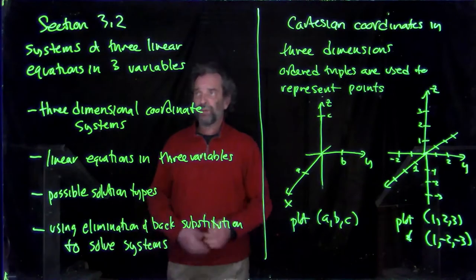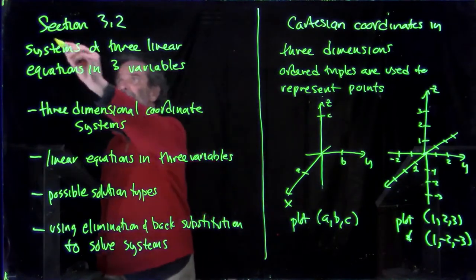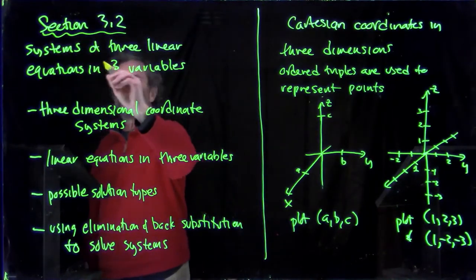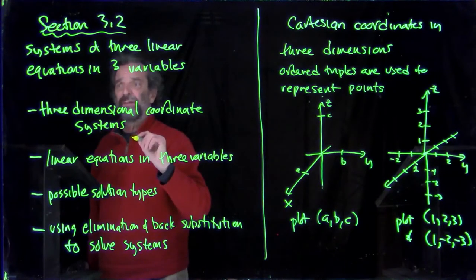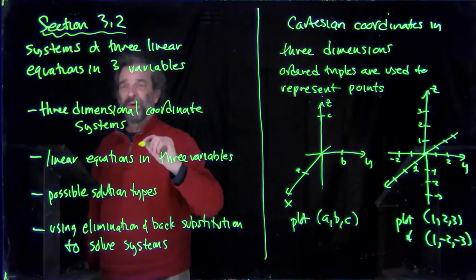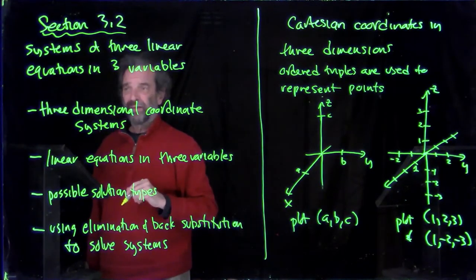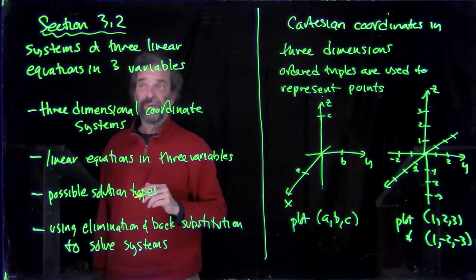Okay, we're in section 3.2. 3.2 is about systems of three linear equations in three variables, so x, y, and z most likely in these equations instead of just x and y we might have been used to before.